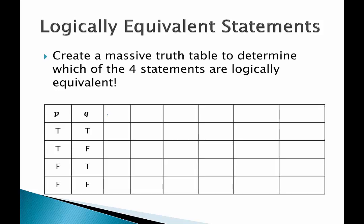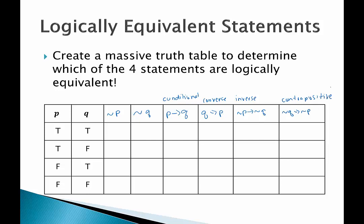We have P and Q, and we'll need not P and not Q for two of the three statements. Then we need our four statements: the conditional, the converse, the inverse, and the contrapositive. Let's label them. First our negations: not P is false, false, true, true; not Q alternates false, true, false, true.